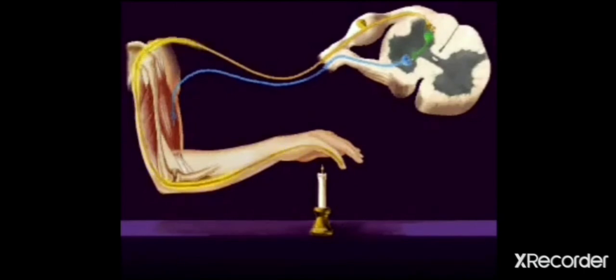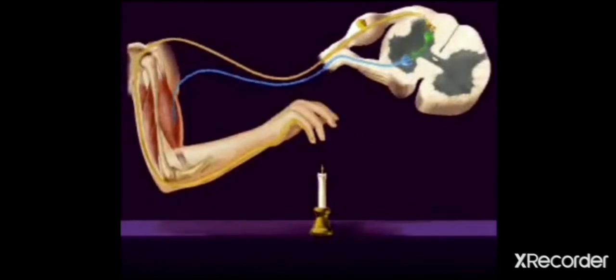Our body needs to respond to certain situations called involuntary actions, where signals may not go up to the brain but pass through the spinal cord. Such responses are called reflexes and the path is called reflex arc. See the reflex arc passing from spinal cord.